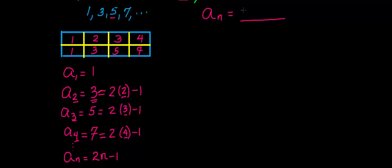So there you have it. a sub n is equal to 2n minus 1. And there is your explicit form of the sequence. I'll see you in the next video.